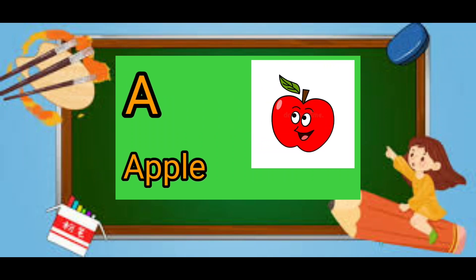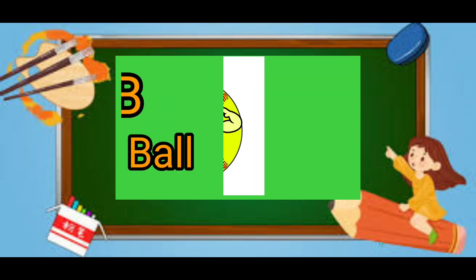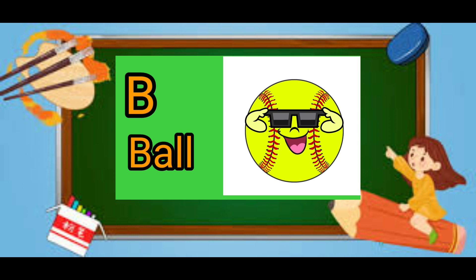A for apple, apple means save. B for ball, ball means gain.